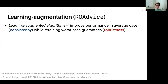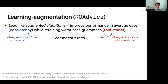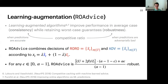We also consider learning-augmented algorithms in this setting. The design goal is given by the ideas of consistency and robustness, which give the competitive ratio when predictions are accurate and adversarial respectively. We introduce an algorithm called RORO advice, which combines the decisions made by some learning-based model with those of RORO at each step. With this simple technique, we achieve 1 plus epsilon consistency for a given epsilon and bounded robustness.